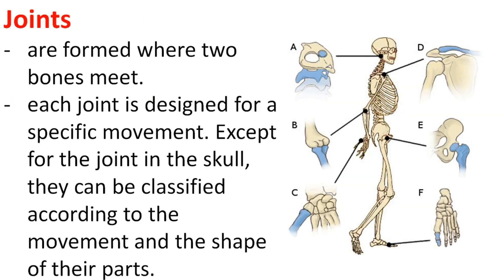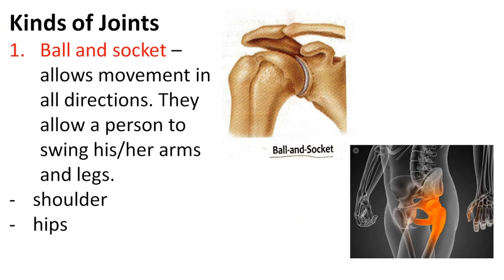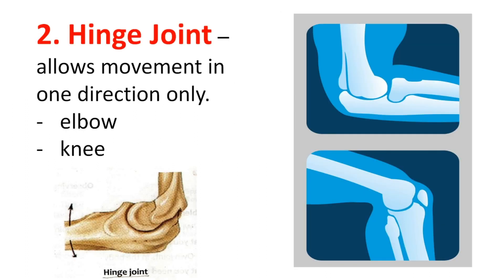Joints are formed where two bones meet. Each joint is designed for a specific movement, except for the joints in the skull. They can be classified according to movement and the shape of their parts. The first kind is the ball and socket joint, which allows movement in all directions and allows a person to swing their arms and legs. Examples are the joints in the shoulder and hips. The hinge joint allows movement in one direction only. Examples are the joints in the elbow and knees.